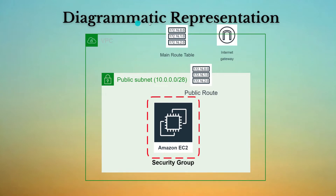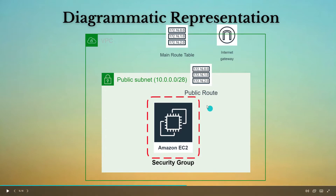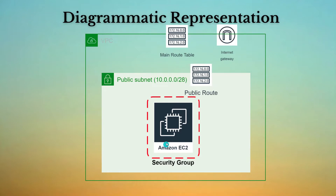Moving to the diagrammatic representation: we already have a VPC and Internet Gateway associated with that VPC, which enables Internet access within the VPC. Within this VPC, we have launched a public subnet as part of our prerequisite. This public subnet has a public route table with a route entry to the Internet Gateway for all Internet traffic. We are going to launch an Amazon EC2 Ubuntu instance inside this public subnet.